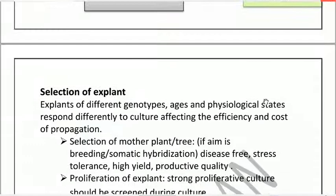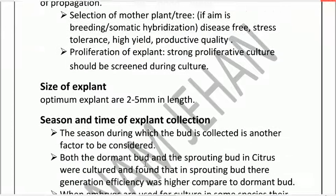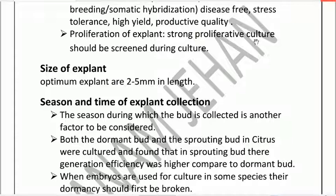Selection of explant: explants of different genotypes, ages, and physiological states respond differently to culture, affecting the efficiency and cost of propagation. The mother plant should be disease-free, stress-tolerant, high-yield, and of productive quality. The explant should also show strong proliferative culture, meaning the number of cells increases during culture — this is called proliferative culture.